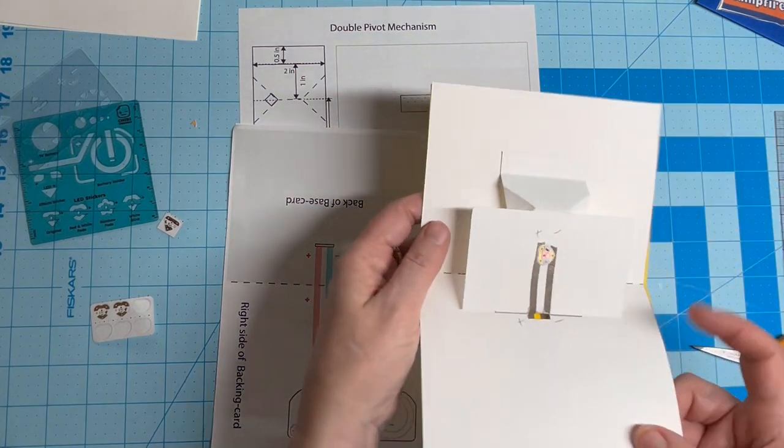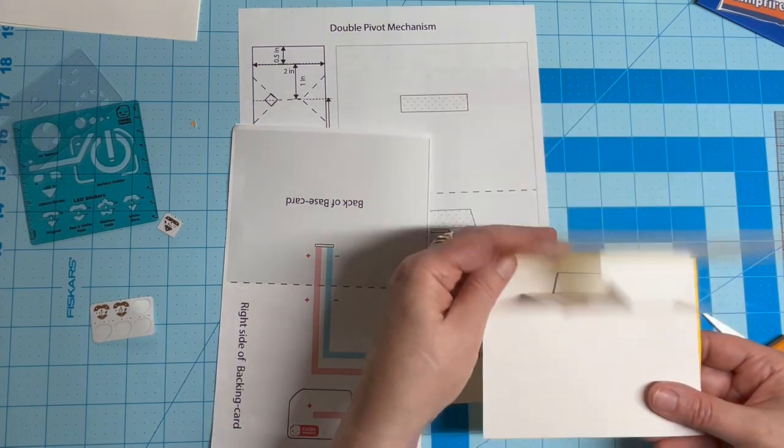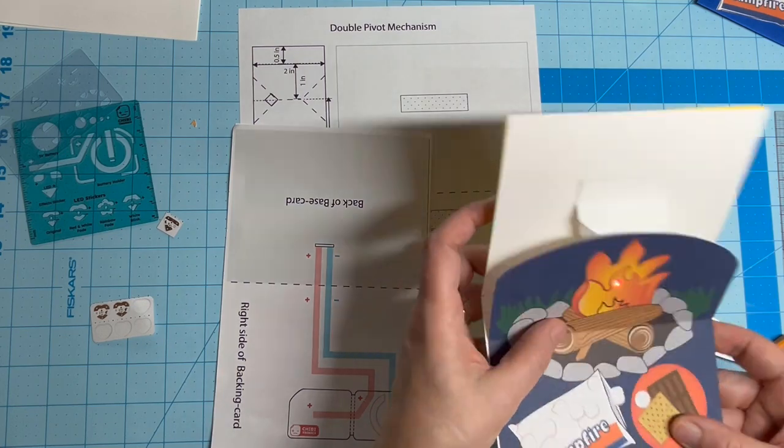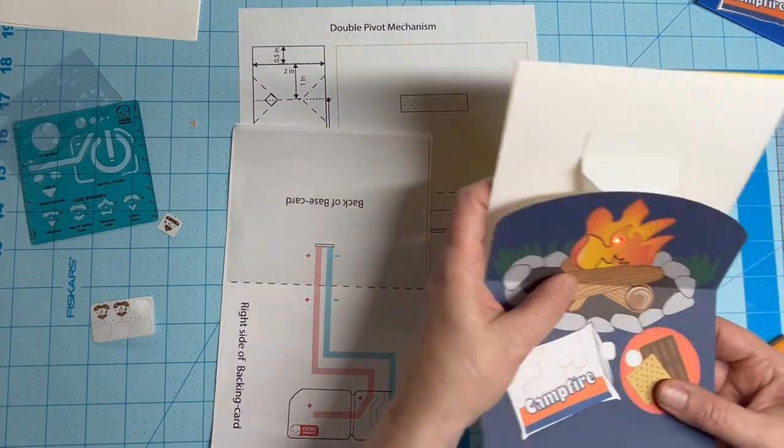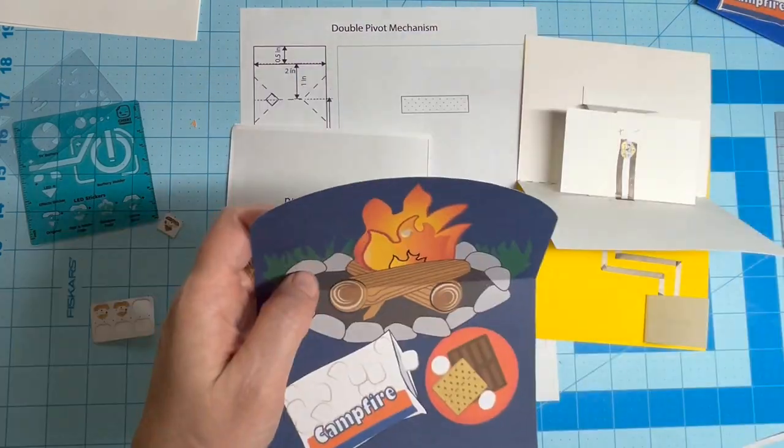The last step to building your circuit is to adhere your LED sticker with the broad end touching the positive trace and the narrow end touching the negative trace. Ensure that your LED lines up with the hole.